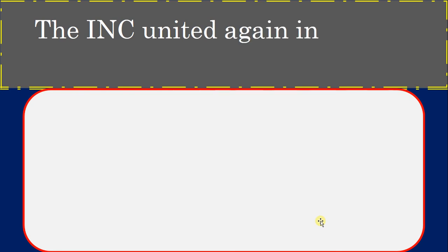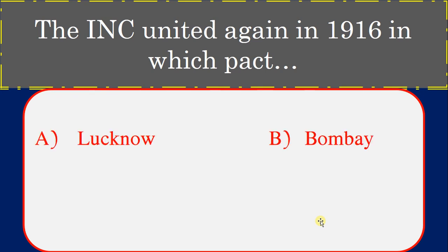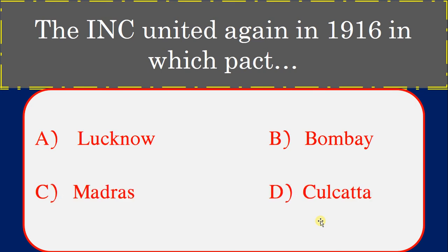The Indian National Congress united again in 1916 at which session? Options: Lucknow, Bombay, Madras, Calcutta. Correct answer: Lucknow Session.